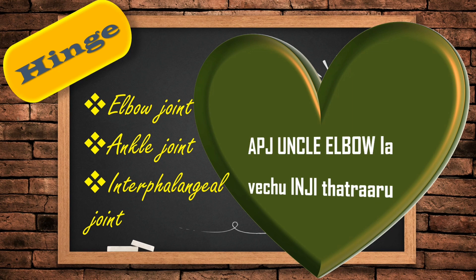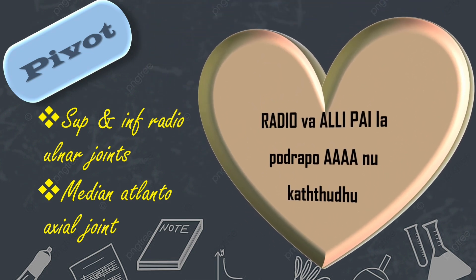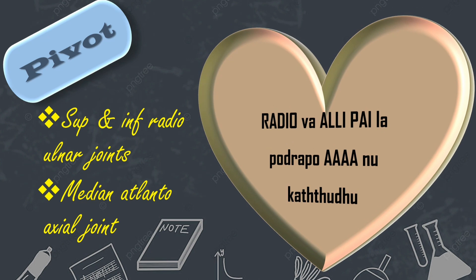Next is pivot joint. Superior and inferior radio-ulnar joint, and median atlanto-axial joint. The pivot story: radio-ulnar joint is pivot. Atlanto-axial joint is also pivot.